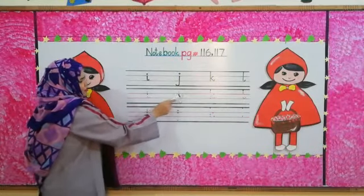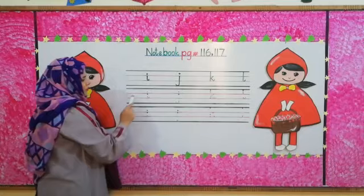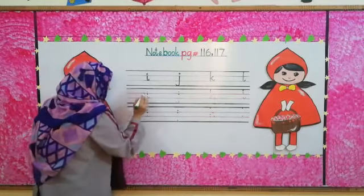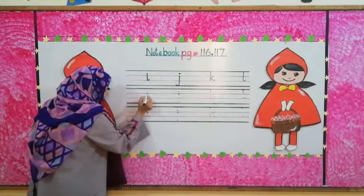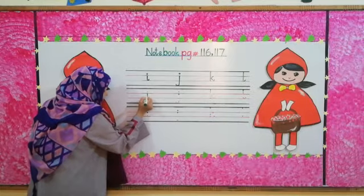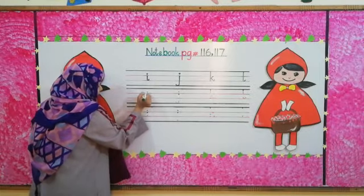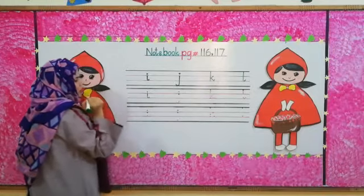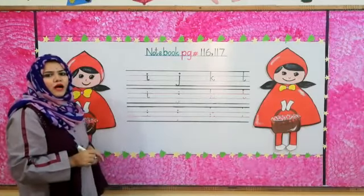We will start from the green dot, because green is our starting dot. We will write I — first come down and do a stroke. Make our dot on the top. This is letter I.